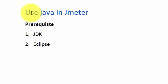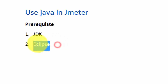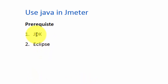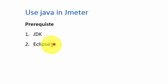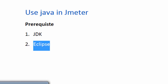Before moving to Java programming, first we need to cover the prerequisites. To do programming we need JDK and Eclipse. I'm taking an example in which I assume that we don't have JDK and Eclipse, so first we are going to set up JDK and then we are going to set up Eclipse in our system.